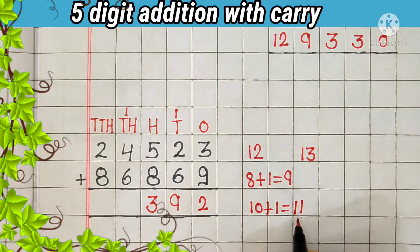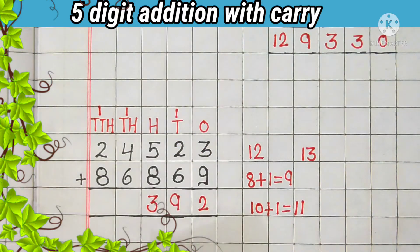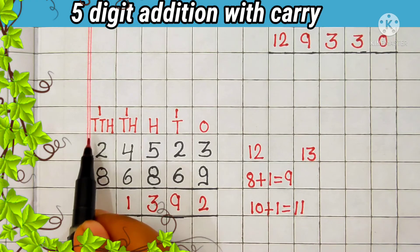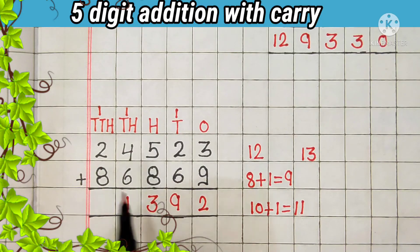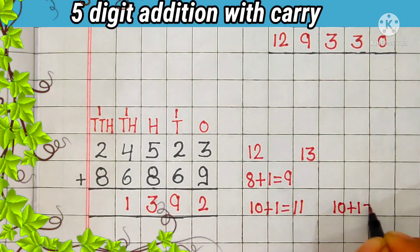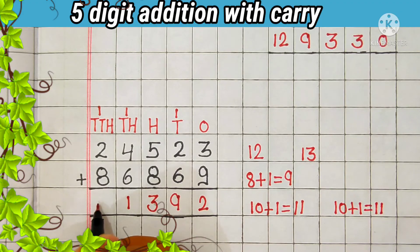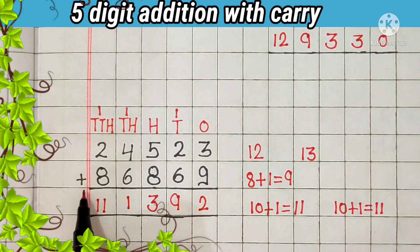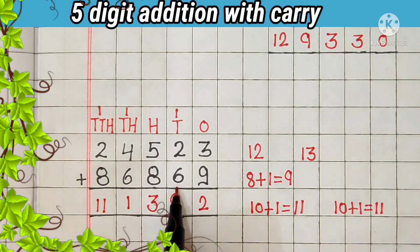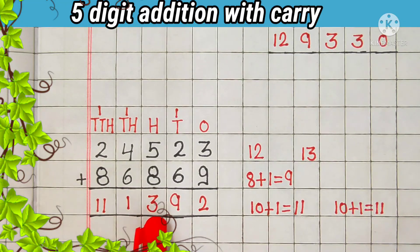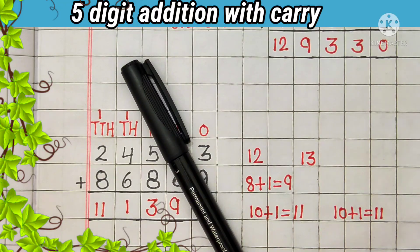11 is a 2-digit number. Now we will carry 1 to the 10,000s place, and 1 comes in the answer. Then let's add the digit at the 10,000s place. 2 plus 8 is equal to 10; 10 plus 1 carry is equal to 11. Answer is 11. So 24,523 plus 86,869 is equal to 1,11,392. Ok students, take care and bye bye.